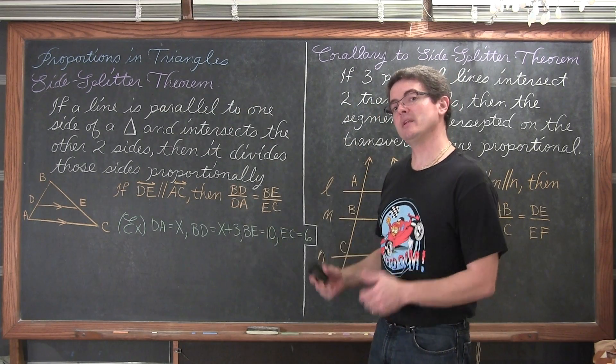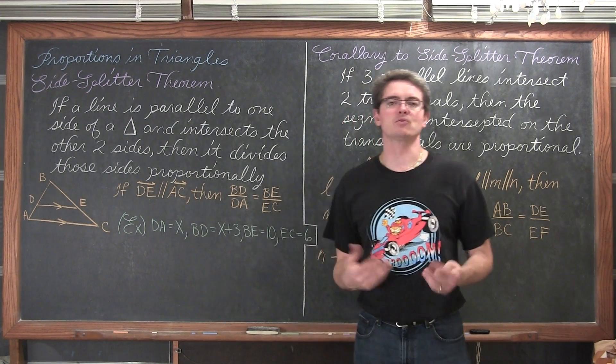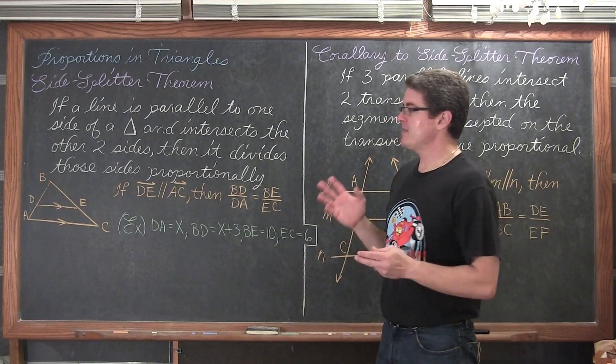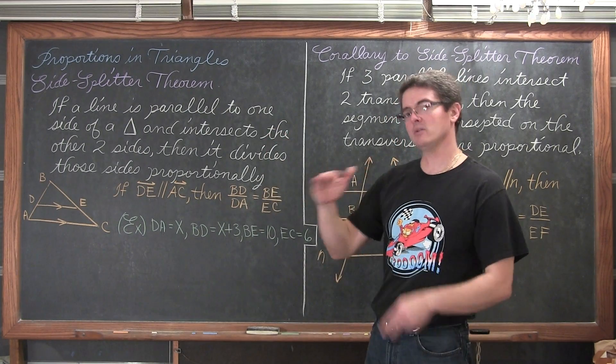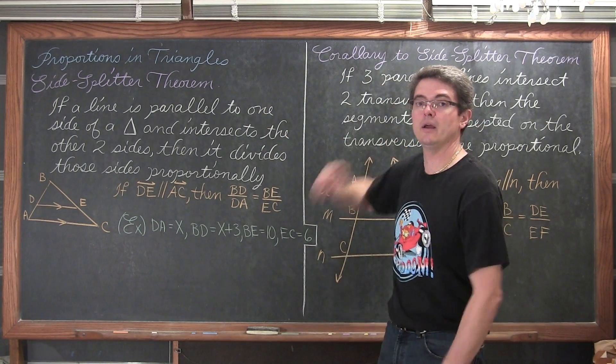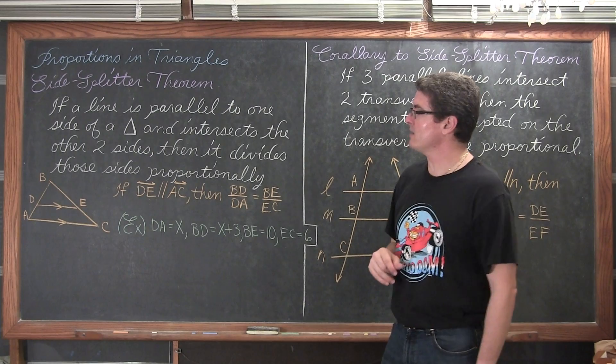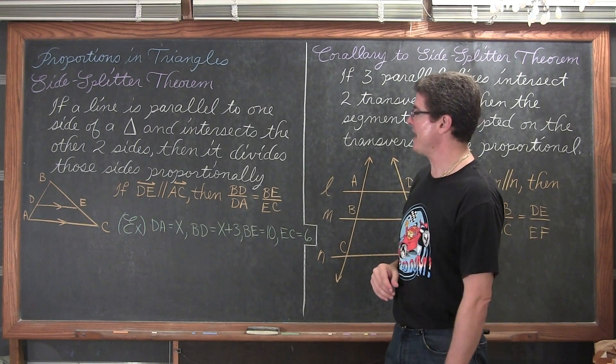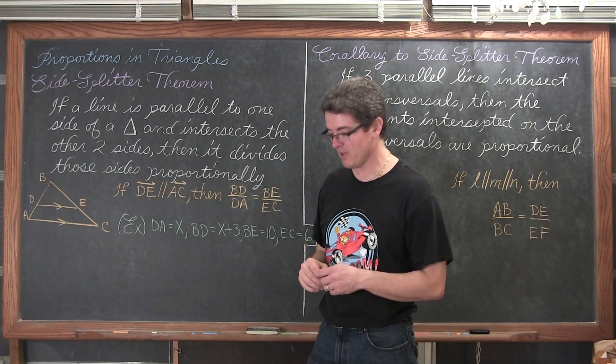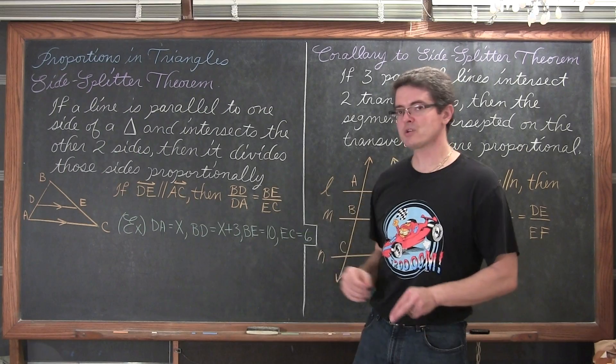We are going to be looking in this video and the next, more proportions in triangles, as if we haven't already done enough with all the similar triangles and introduction to ratios and proportions and similar polygons. This one is going to be about parallel lines going through, in the beginning, parallel lines going through a triangle. We are going to do a theorem, a corollary, and two examples.